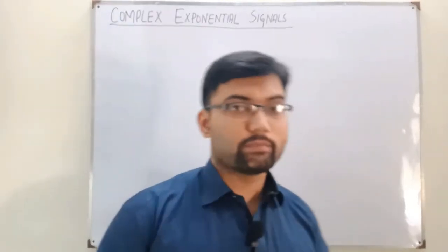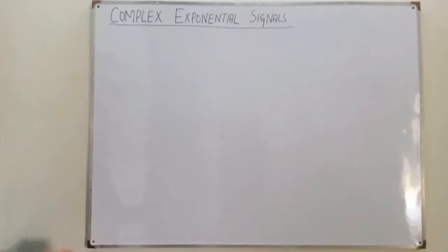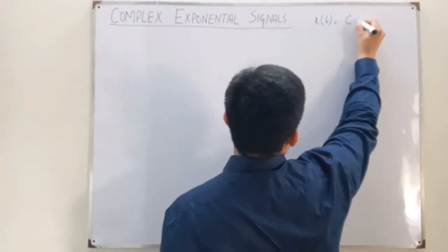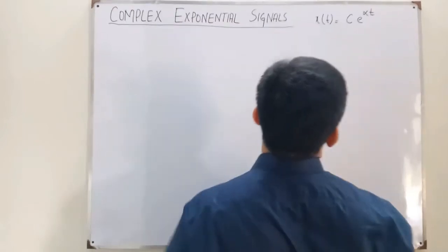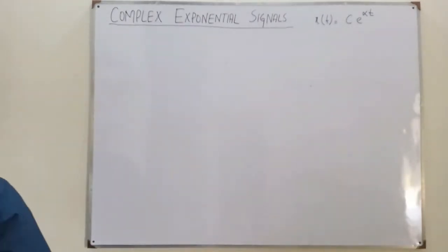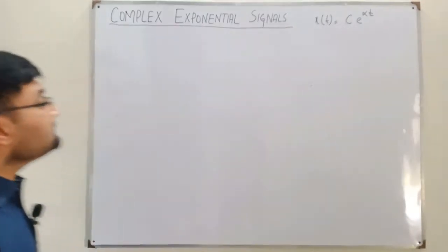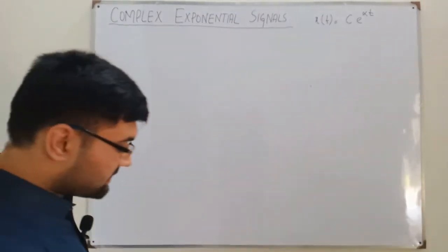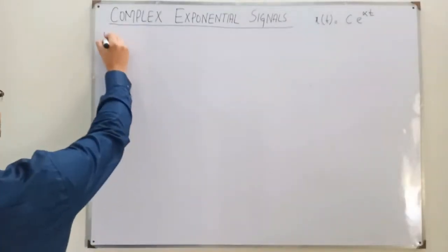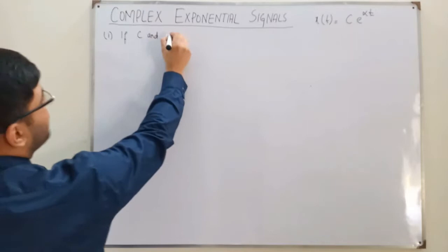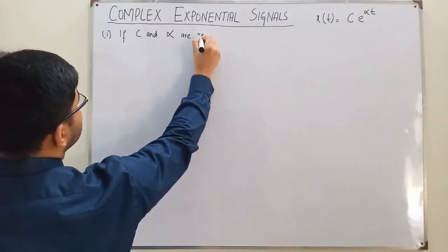Coming to the topic: a complex exponential signal is generally written in the form x(t) = c·e^(αt), where c is the amplitude. We are first seeing this in the continuous time domain, and we will also see this signal in the discrete time domain. Now c and α are generally complex numbers, but we will look at them step by step.